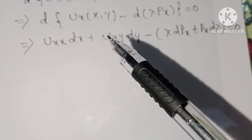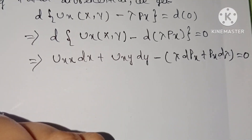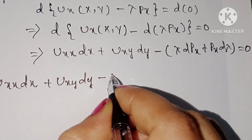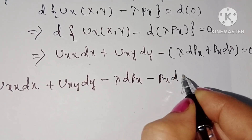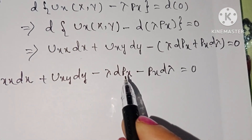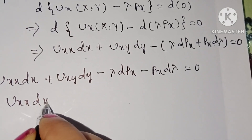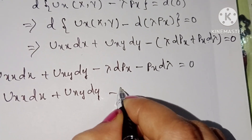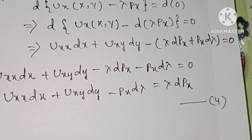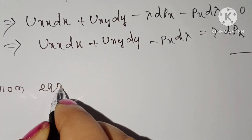After removing the bracket, this becomes u_xx·dx plus u_xy·dy minus λ·dpx minus px·dλ equal to zero. Taking minus λ·dpx to the right-hand side, this becomes u_xx·dx plus u_xy·dy minus px·dλ equal to λ·dpx. This is equation number four.